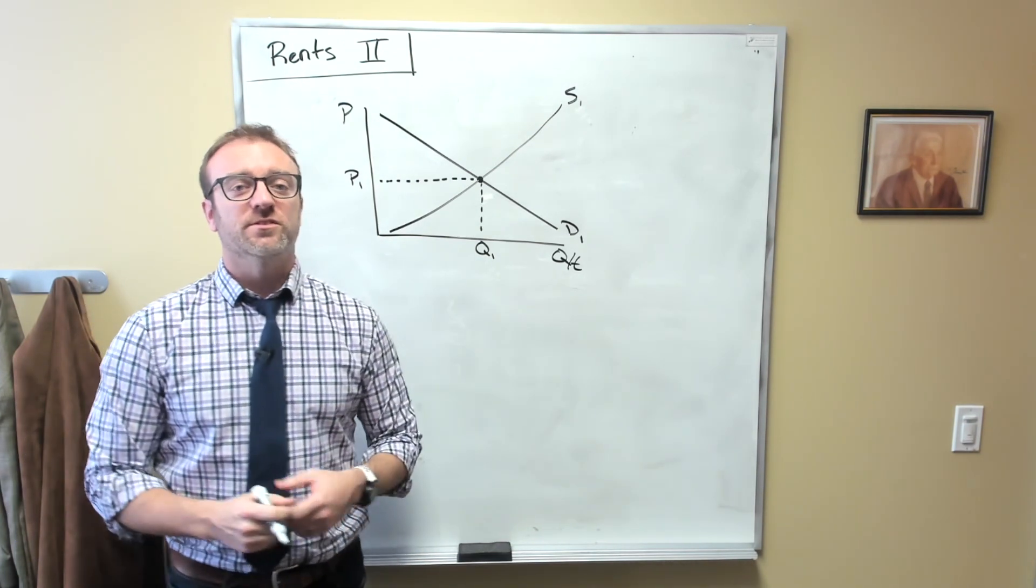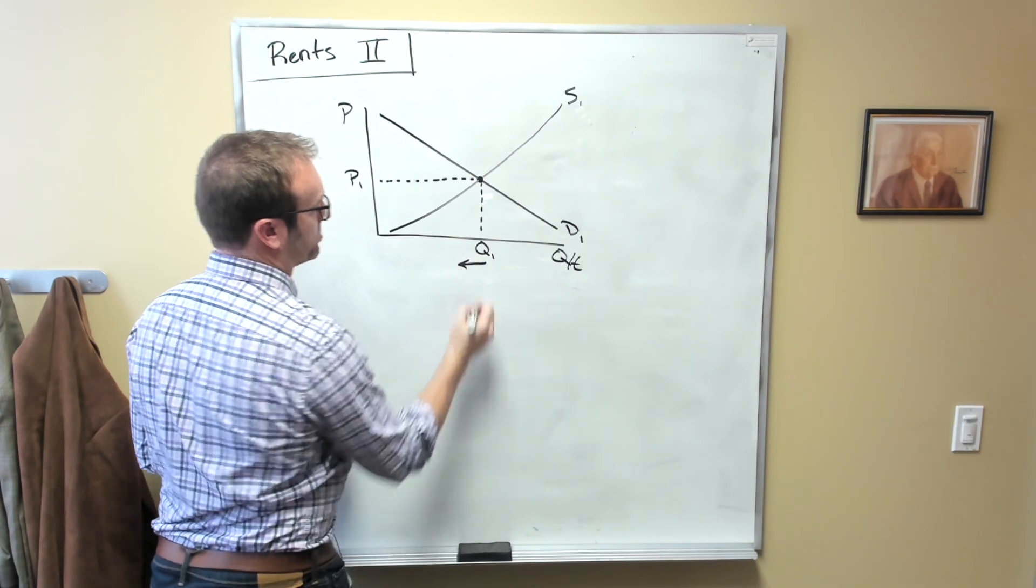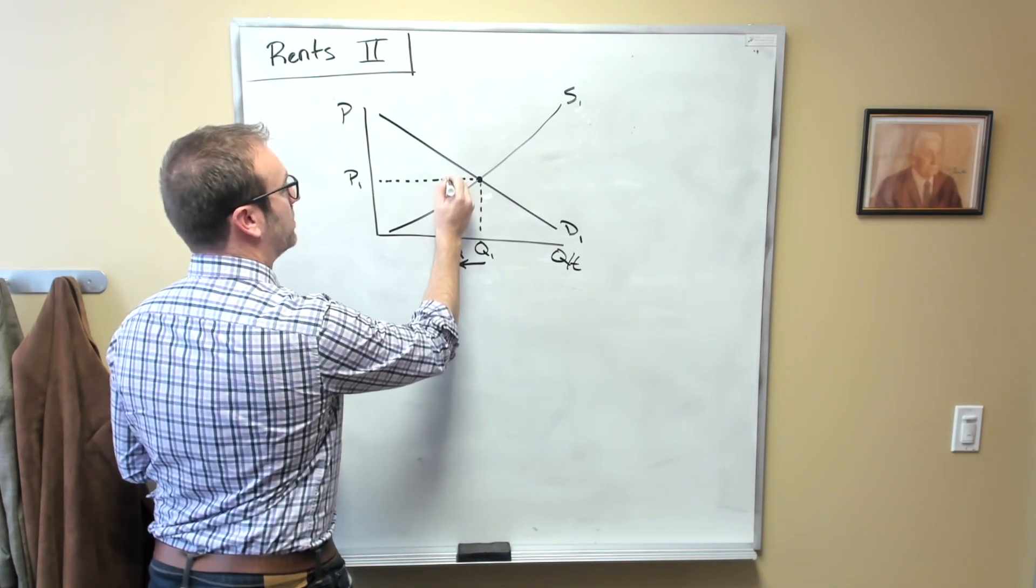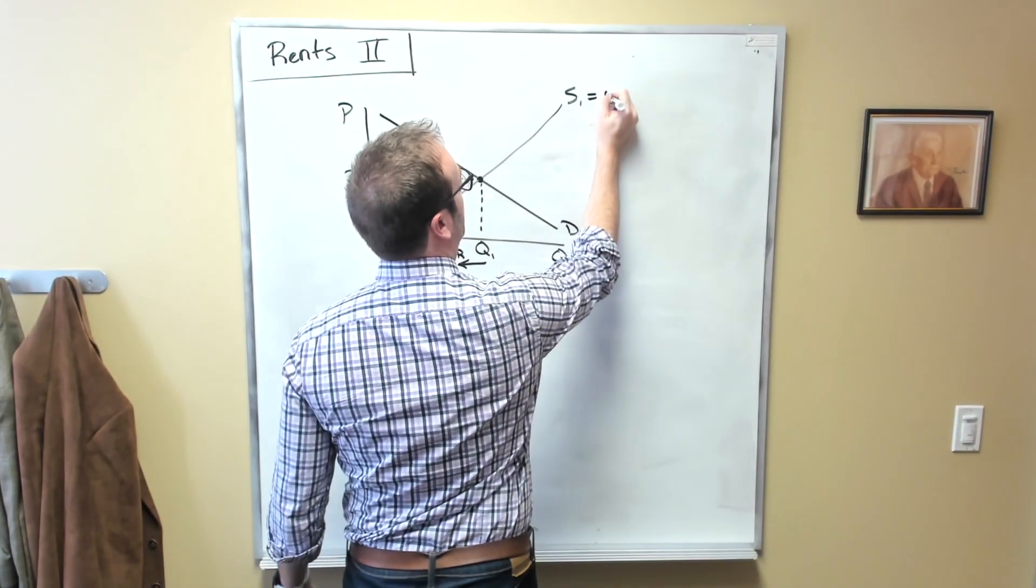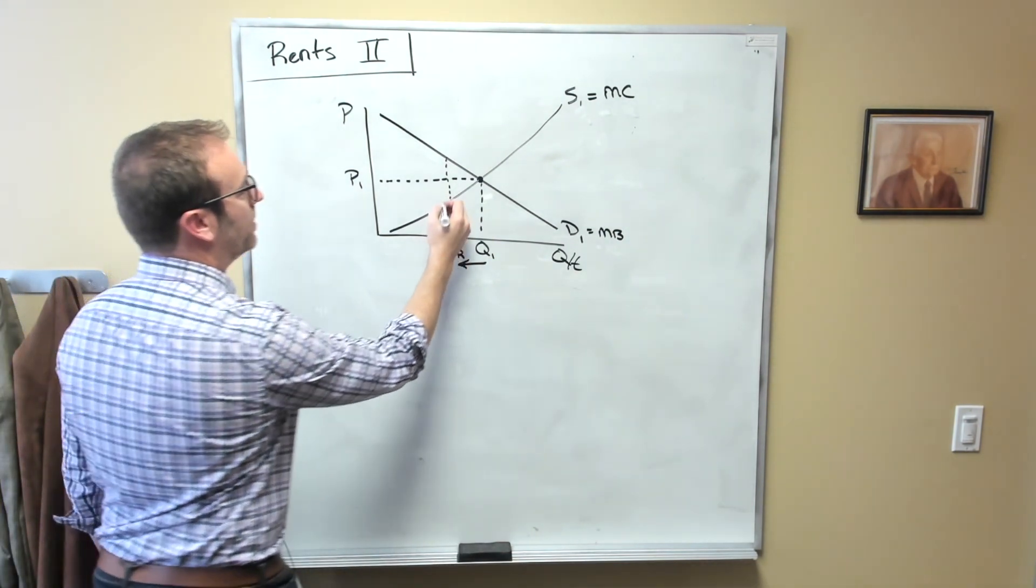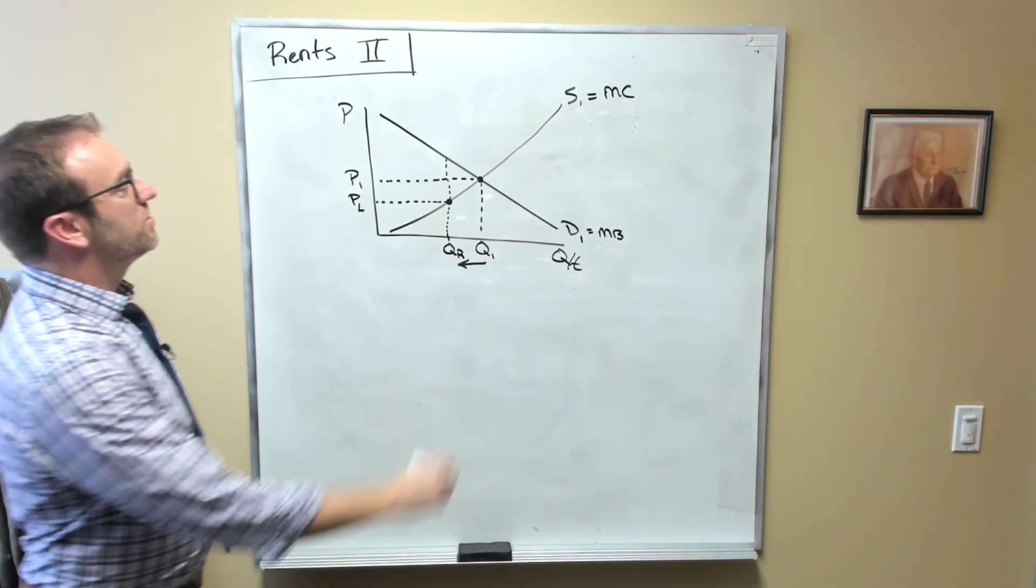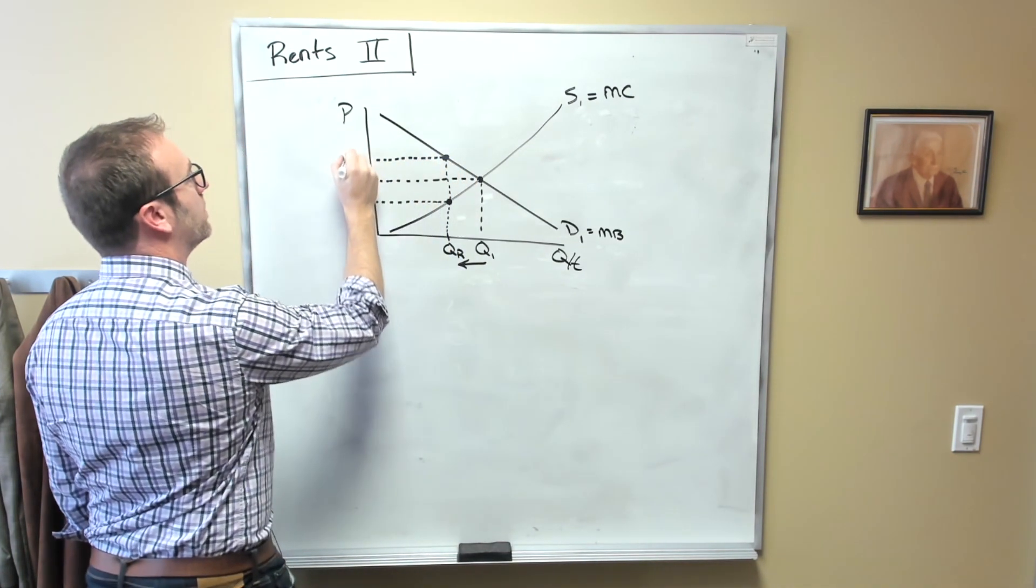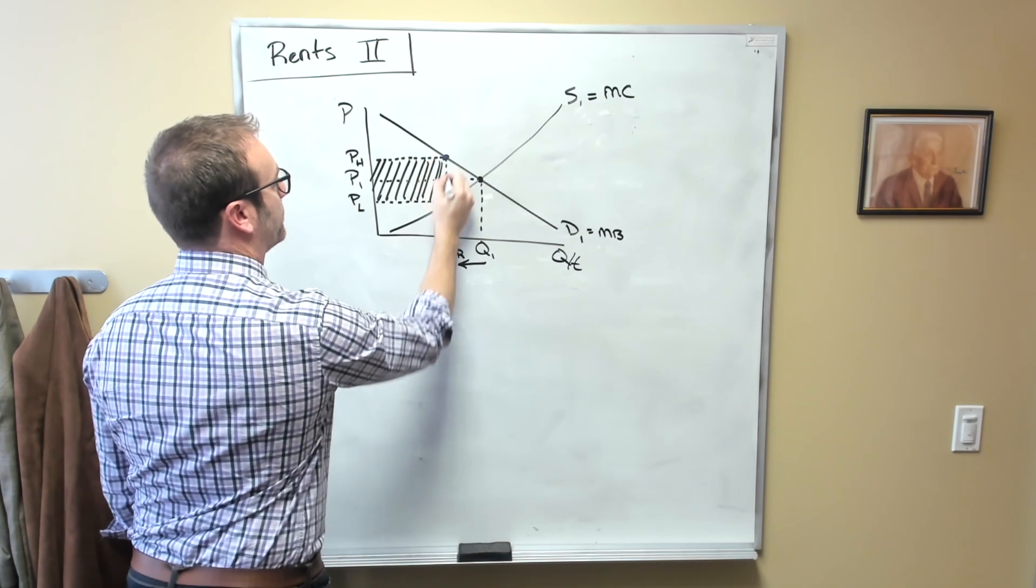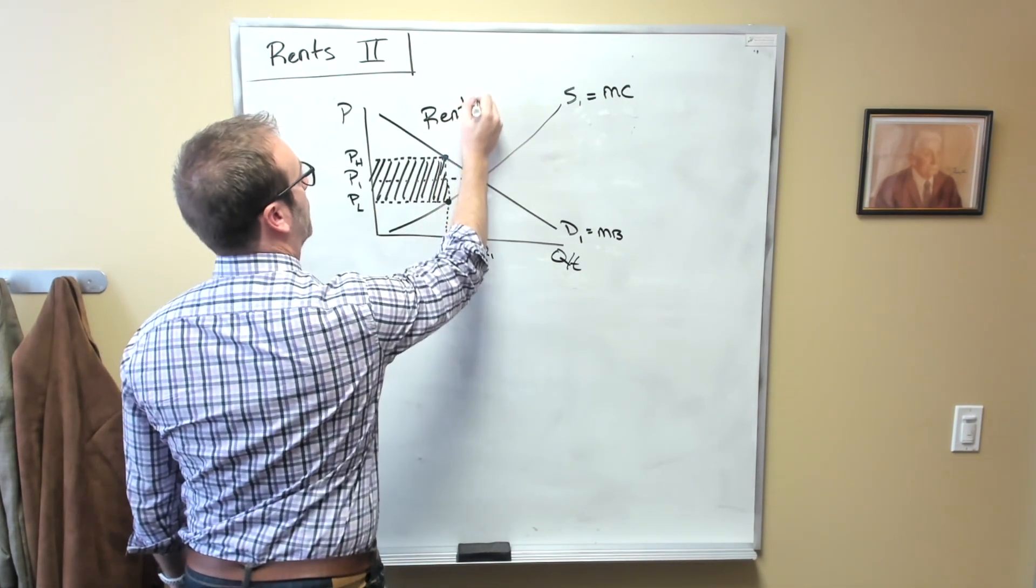However, in a market with licenses or any other type of barrier to entry, what this ends up doing is reducing the amount of this good that is actually available. So, we'll call this amount Q rent. And so, this amount that exists comes up here. Now, remember, the supply curve is the same as the marginal cost curve, and the demand curve is the same as the marginal benefit curve. What we see here is that the cost, the marginal cost of producing this good is right here. I'll call this P L. But consumers are willing to pay all the way up here, and I'll call this P high. And so, this rectangle right here becomes excess profits earned over and above the opportunity cost of these resources. So, the rent would be right here.